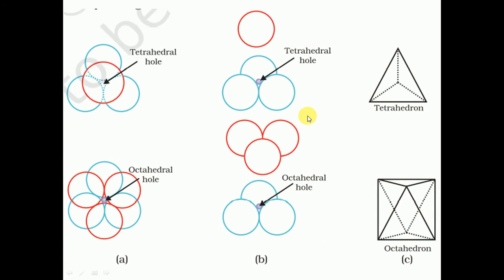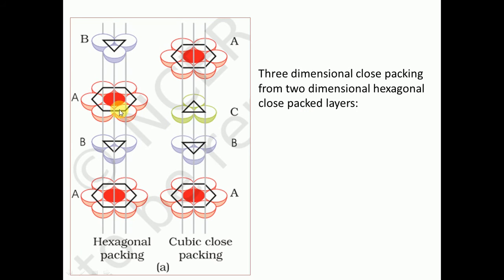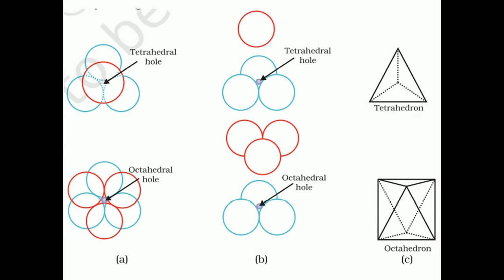If we stack hexagonal two-dimensional close-packed layers, we get either the ABAB-type hexagonal close-packed (HCP) structure or the ABCABC-type cubic close-packed (CCP) structure. We can see in the figure the first layer in blue color showing the arrangement of atoms, and the upper layer covers the depression of the lower layer. This forms either the HCP or CCP three-dimensional packing.